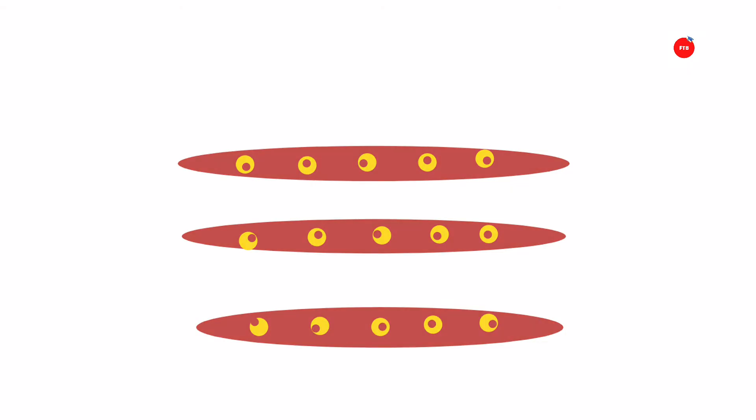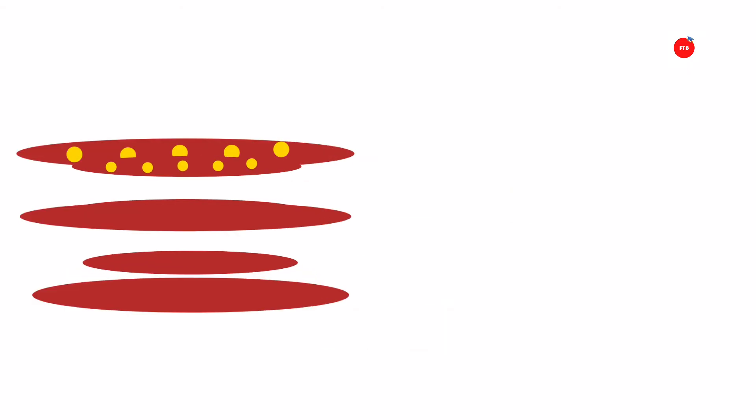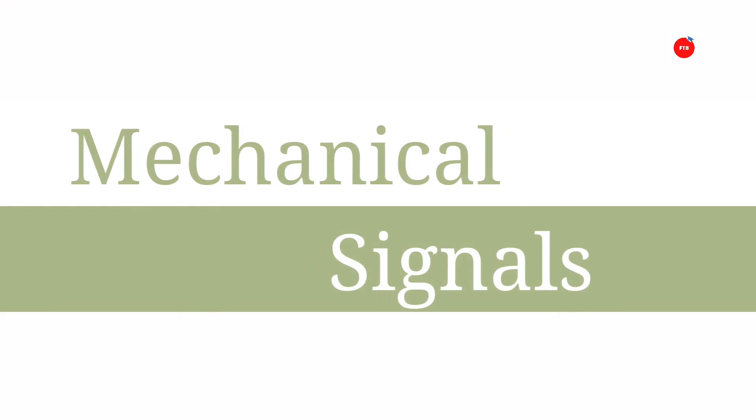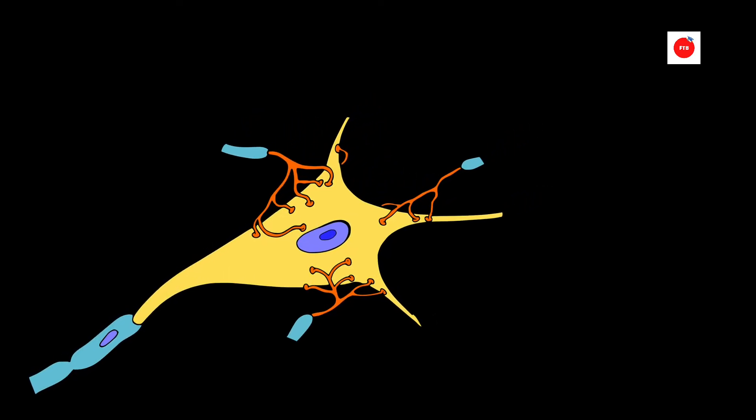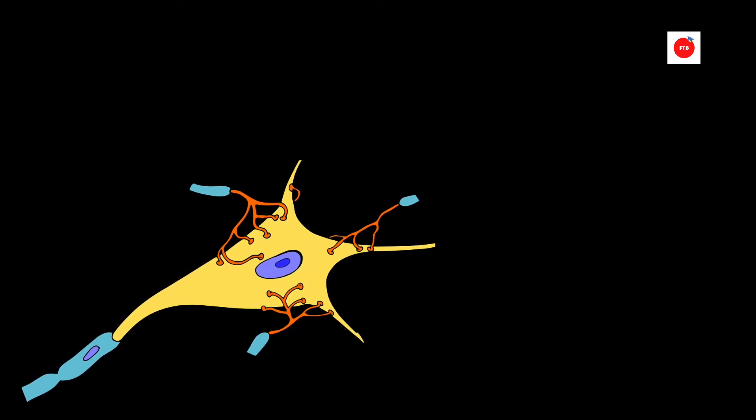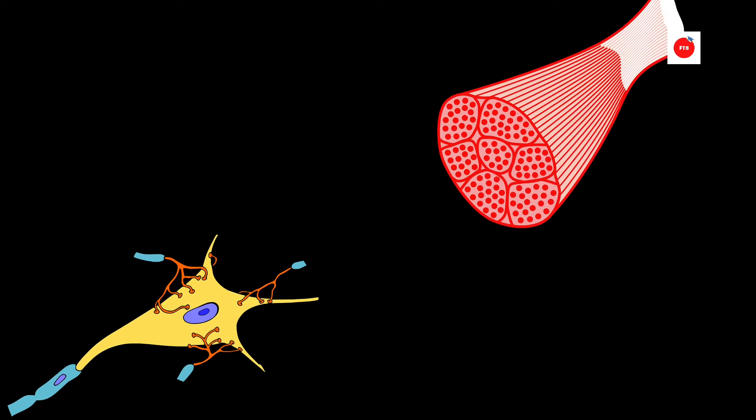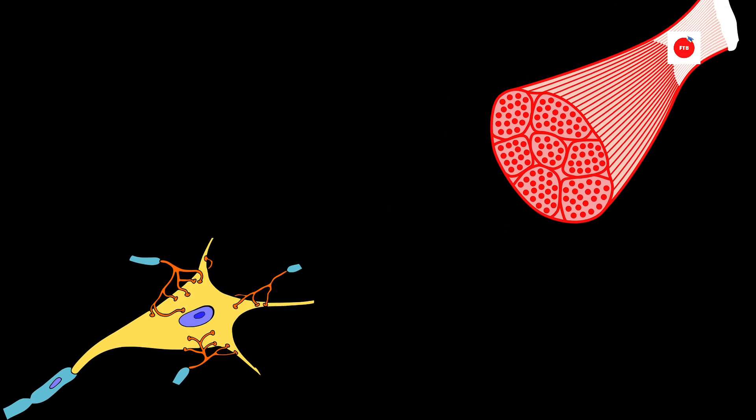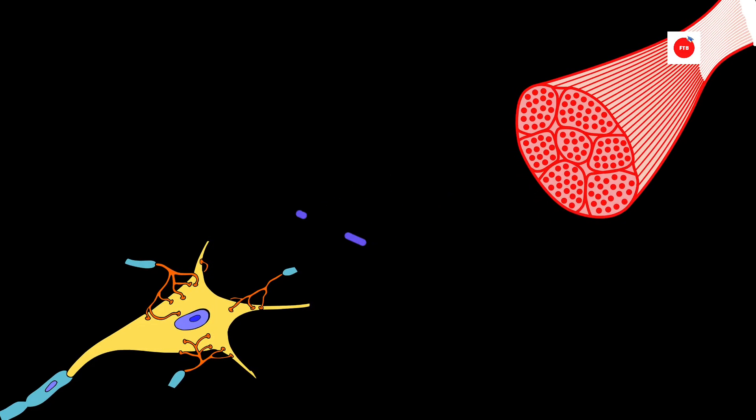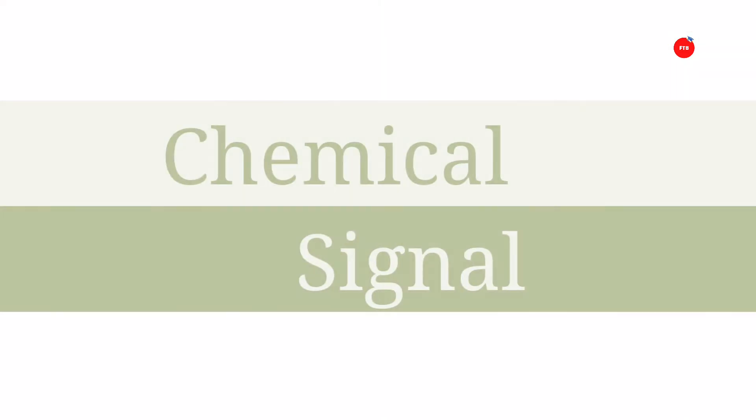Now this contraction is important for the proliferation and differentiation of skeletal muscle cells because this allows maturation and these types of signals are mechanical signals. Now the action potential which allows contraction is generated by an ion flux at voltage-gated sodium channels at a junction between neuron and a muscle fiber. Now this is an example of chemical signal.